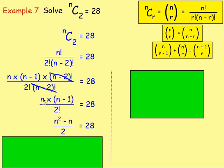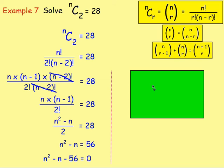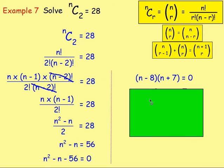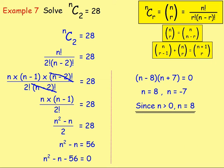Expanding n times (n minus 1) gives n squared minus n. Multiplying both sides by 2: n squared minus n equals 56. Subtracting 56: n squared minus n minus 56 equals 0. Factorising: (n minus 8)(n plus 7) equals 0, giving n equals 8 or negative 7. You cannot have negative 7 objects, so n must be bigger than zero, meaning n equals 8.